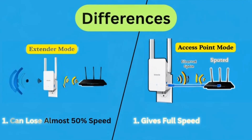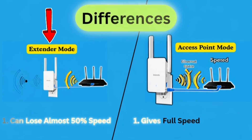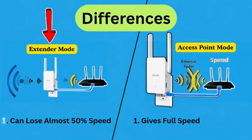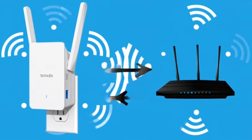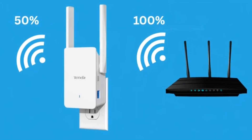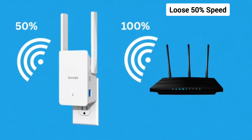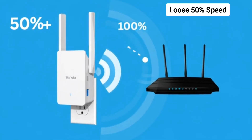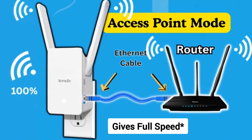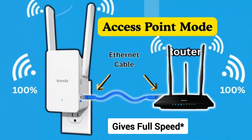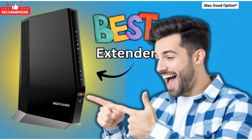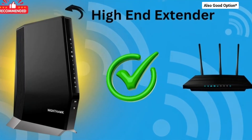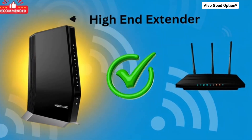Second, a basic wireless repeater often cuts effective throughput because it must use the same radio to receive and resend the traffic — it can lose up to 50% in worst cases on single-band devices. Access point mode keeps full speed because the backhaul is wired. On top of that, high-end extenders with a dedicated backhaul, like dual-band or tri-band devices, work even faster.